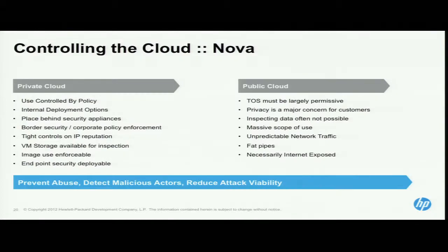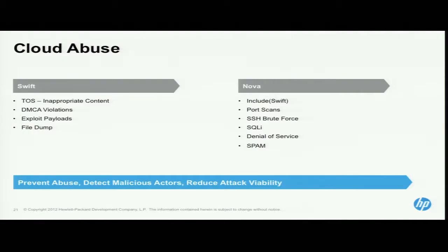We have constantly expanding capacity, especially in networking, which makes it very difficult to use common static controls. The cloud is designed to deal with anomalous behavior, so we can't sit and say we'll have exactly this much usage over this period. We have to plan big and at scale. Here's some abuse we see people trying to do with HP Cloud: Swift gets people storing things our terms of service say we don't want. Sometimes people try to store copyright material on the cloud — that's not new, but we need ways of detecting and dealing with it.